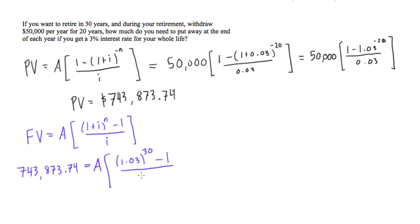If you just punch this in your calculator, we only have one variable here, so if you solve for A, we're going to find that A, our annuity, is going to equal $15,635.68.